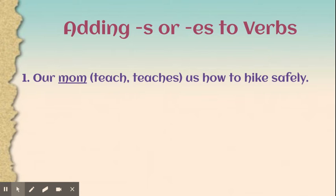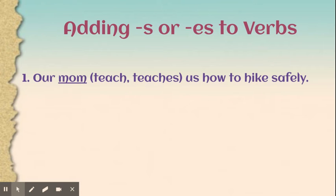Let's do some practicing together. Sentence number one: 'Our mom teach or teaches us how to hike safely.' Mom is the subject — you should have picked 'teaches,' because mom is a singular subject and we add -es because the word 'teach' ends in -ch. The sentence should be: 'Mom teaches us how to hike safely.'